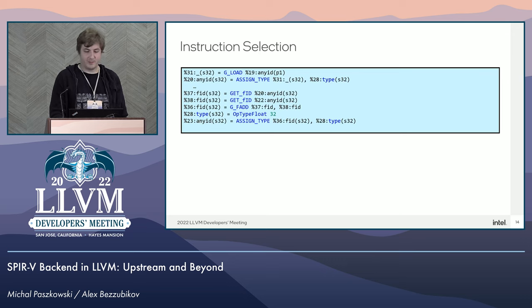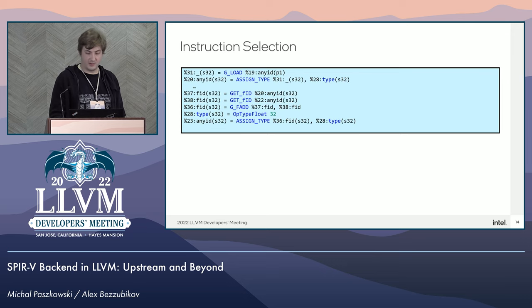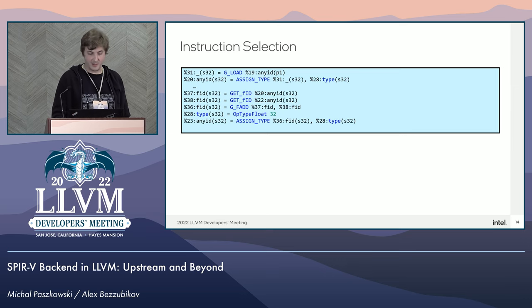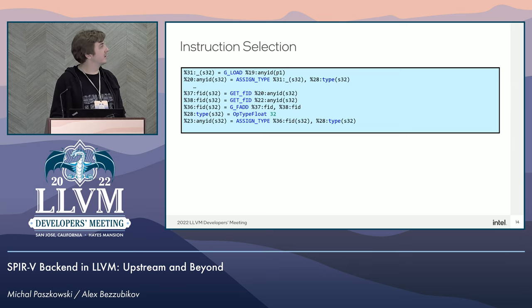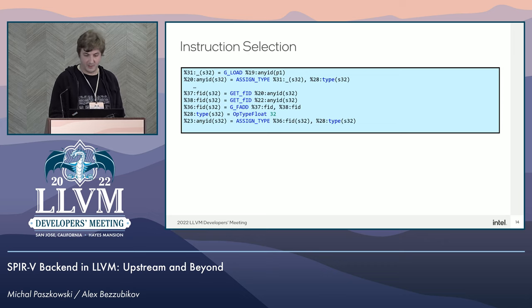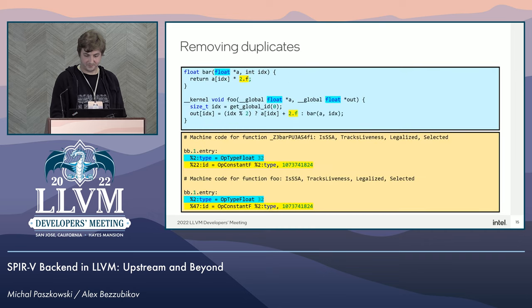This is a complete example of floating point addition with one of its operands being loaded. You can see the pseudo casts there, the assign type instruction after that, and essentially it's going to be folded into a single load and a single floating point addition.